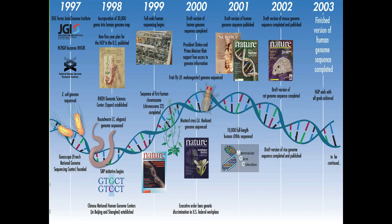Going into the late nineties, more genomic institutes popped up like JGI — the Joint Genome Institute. We got the creation of the National Human Genome Research Institute. E. coli was sequenced, the French and Japanese got involved. Targets for the number of genes in the genome were around 30,000. The first sequence came out for C. elegans. Everyone seemed to be getting into genome-scale work, but the full-scale human genome sequencing only really got going in 1999.